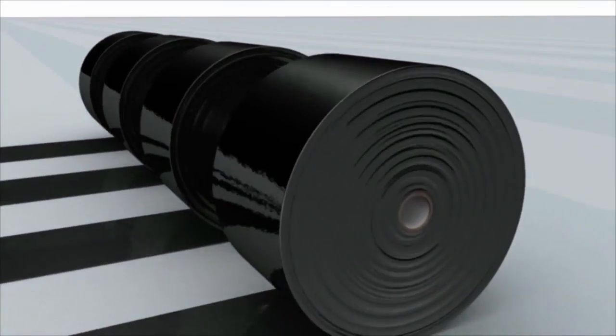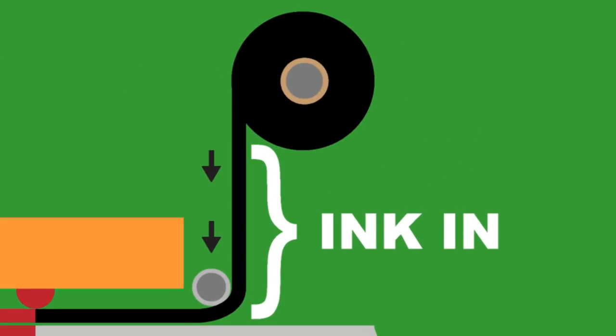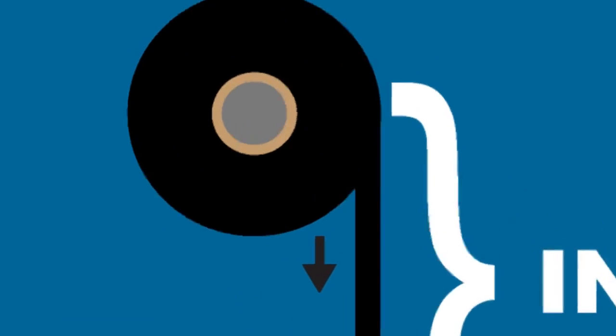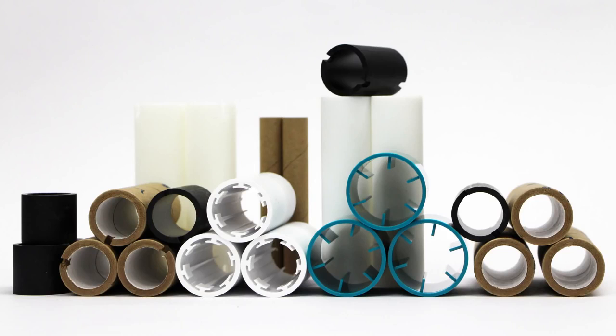Jumbo rolls are slit down to size and wound ink side in or ink side out on a core. Cores are made of plastic or fiber material and may have notches at one or both ends.